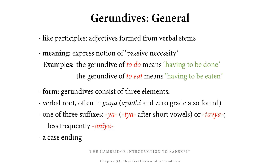Next up, gerundives. Gerundives, like participles, are adjectives formed on the basis of a verbal stem. Their meaning expresses the notion of passive necessity, which means that the gerundive of to do means having to be done, the gerundive of to eat means having to be eaten, and so on. Their form consists of three elements: first, the verbal root (which often stands in guṇa, but we also find vṛddhi or zero grade); then one of three suffixes — ya, tavya, or anīya (and ya is replaced by tya if a short vowel precedes); and then finally a case ending.